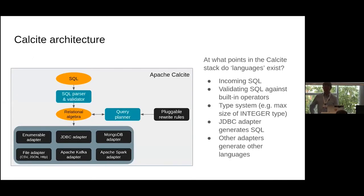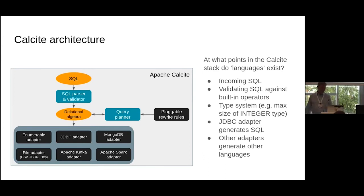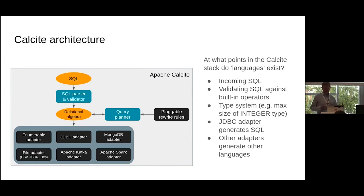This is a diagram of Calcite's architecture, similar to what Stamatis showed earlier. Calcite parses SQL, validates it, translates it into relational algebra, and applies rewrite rules that generate a plan for a number of adapters. Where throughout the stack do languages or dialects exist? Obviously in the SQL parser, but there are other places too. When I talk about dialect support, I mean: is Calcite able to understand a query originally intended for Oracle? Is it able to generate a SQL query targeting Postgres?